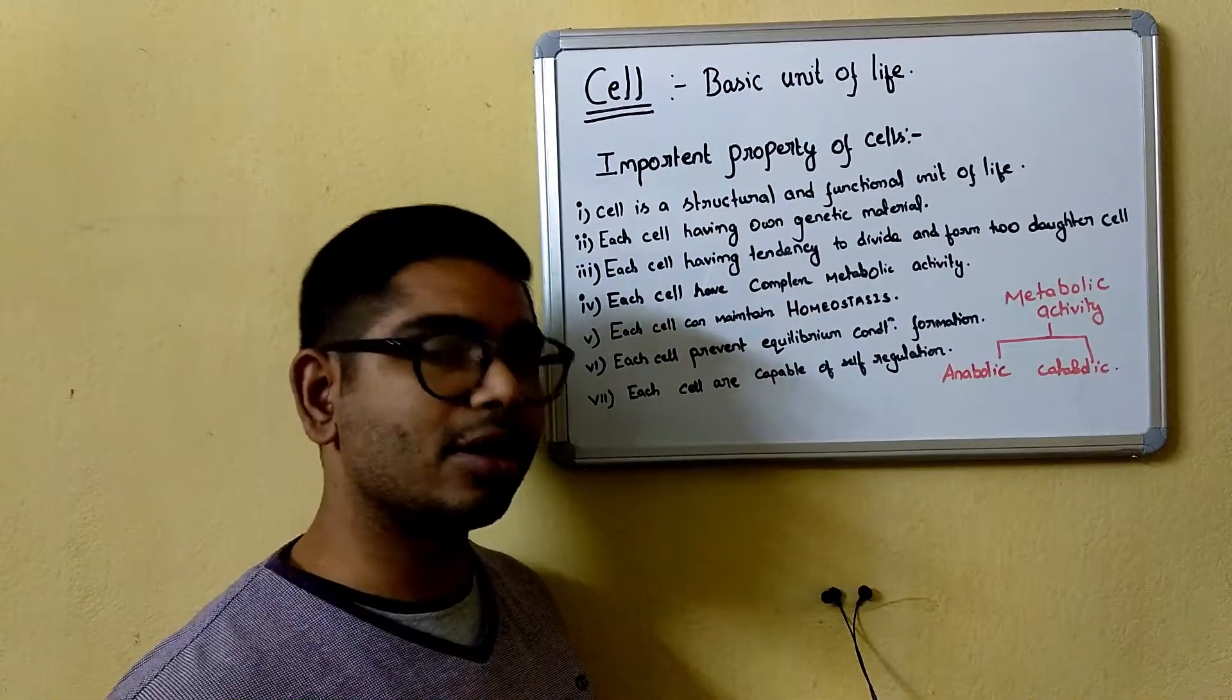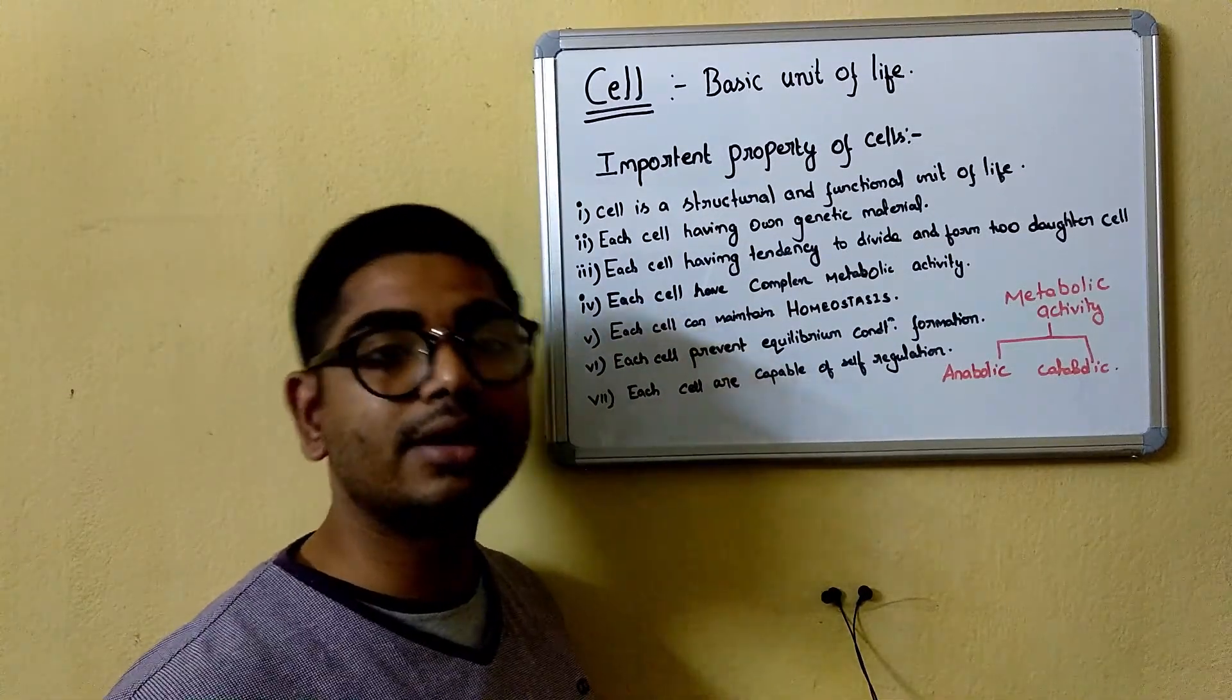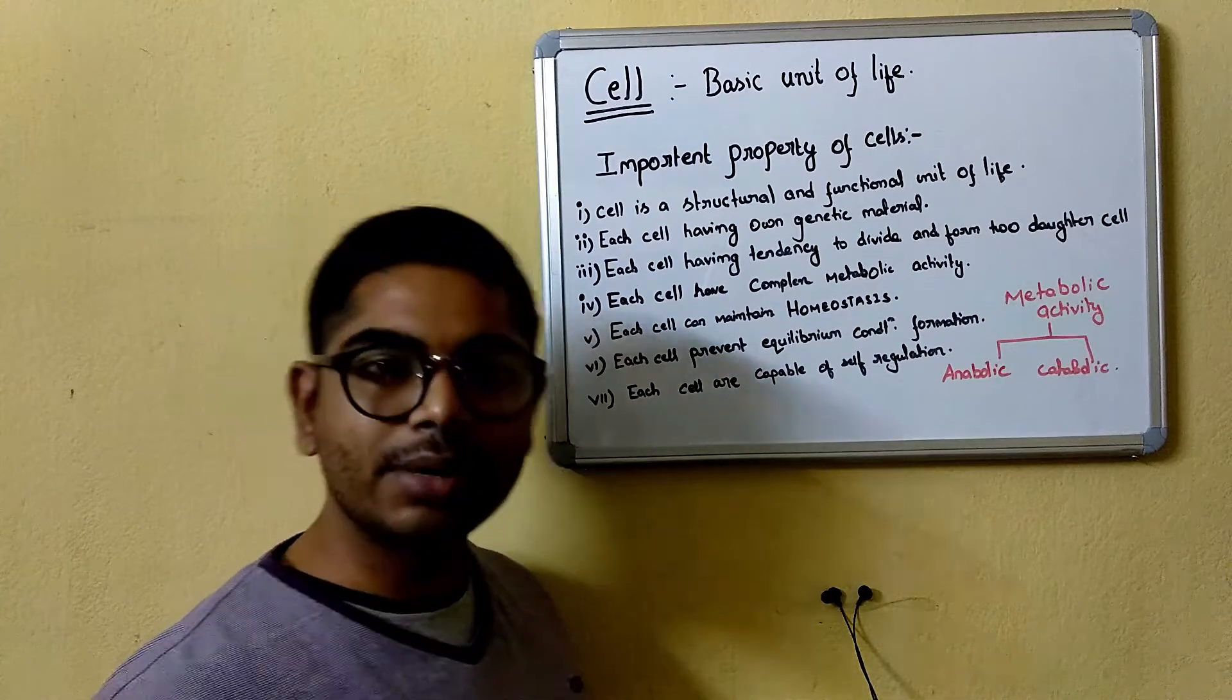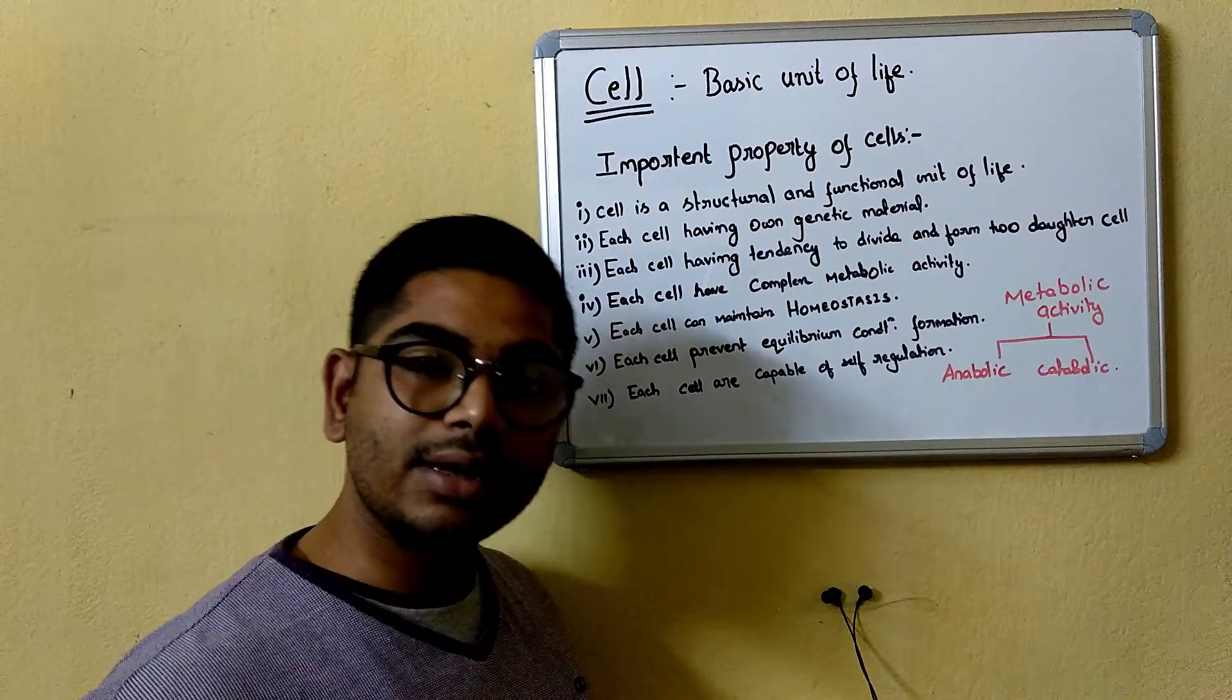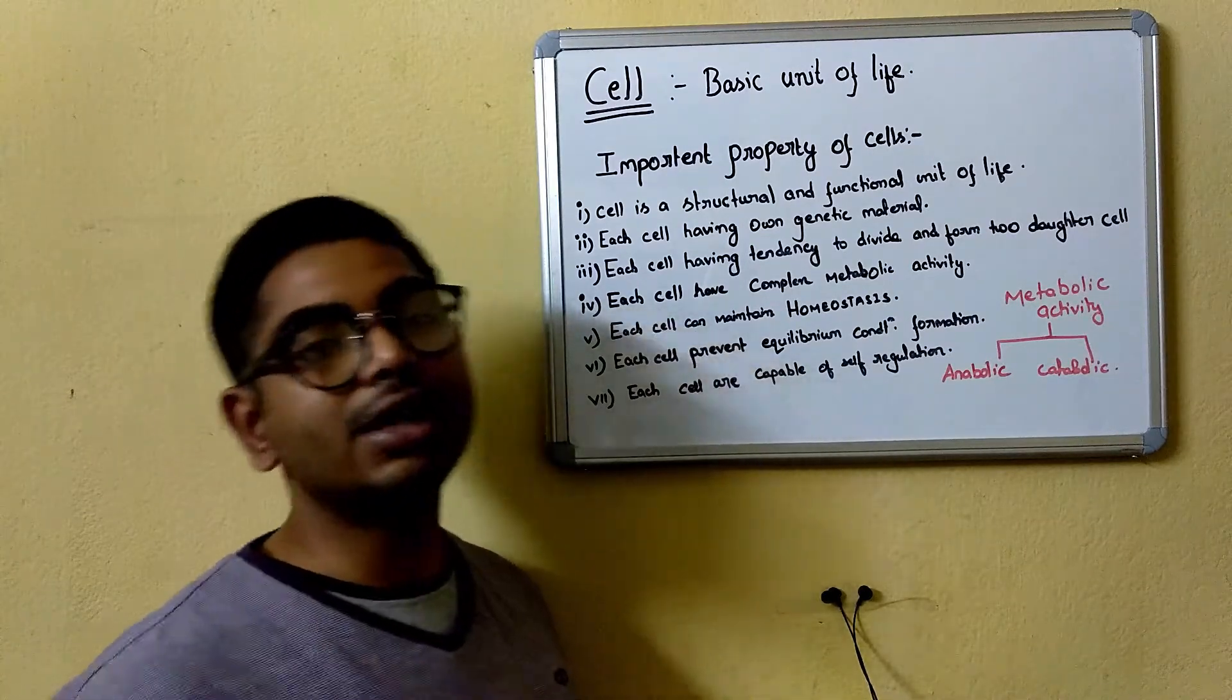What is homeostasis? Homeostasis is the stable state of a cell. How do they maintain it? They maintain it by changing their physiological activity.